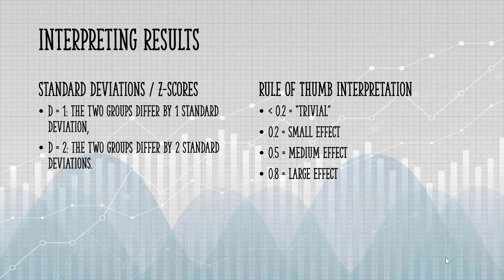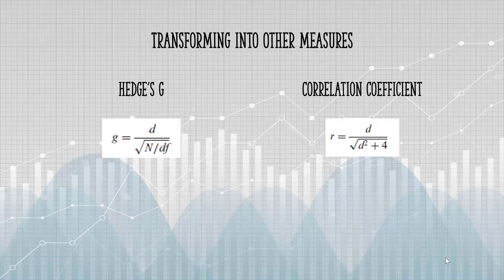Finally, you can transform Cohen's D into other measures using these formulas. For Hedges G, N is the number of items in the two equal samples, and DF is degrees of freedom. For the correlation coefficient, you can plug in D, D-squared, and add 4.